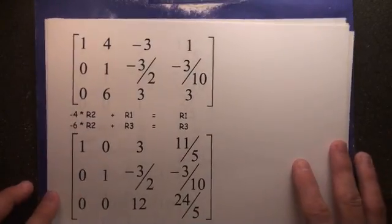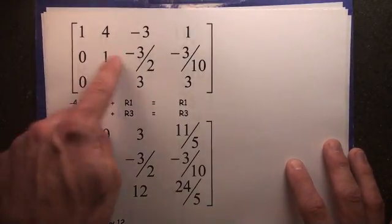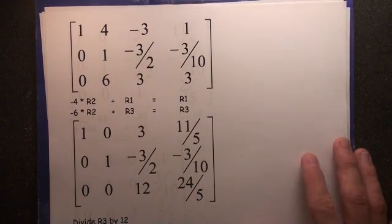Here's what you're going to get. Bam. You're going to get a 0, a 1, a negative 3 halves, and a negative 3 tenths. There you go.